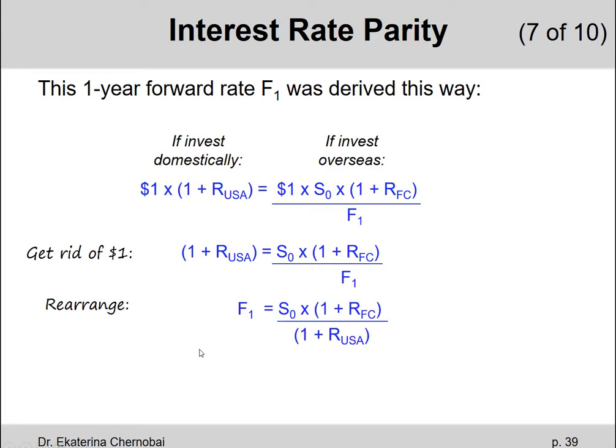Then we can rearrange it and it will look like this: F1 equals S0 times 1 plus the foreign country rate divided by 1 plus RUSA.